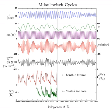Axial tilt: The angle of the Earth's axial tilt with respect to the orbital plane varies between 22.1 degrees and 24.5 degrees, over a cycle of about 41,000 years. The current tilt is 23.44 degrees, roughly halfway between its extreme values.